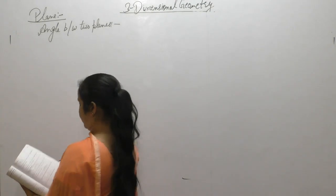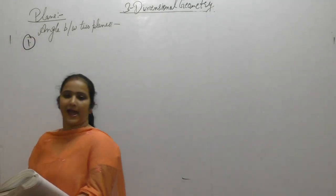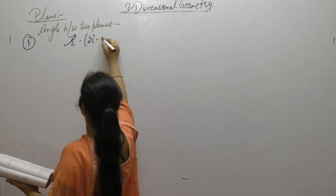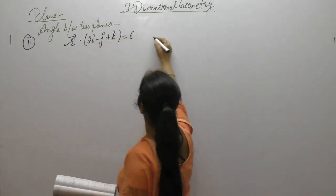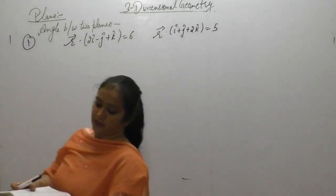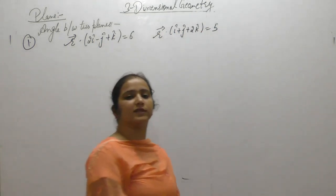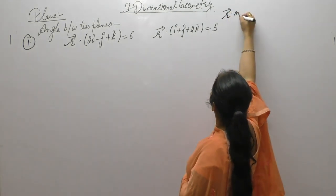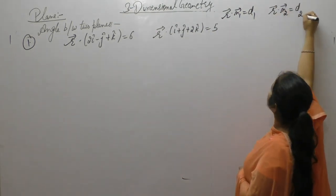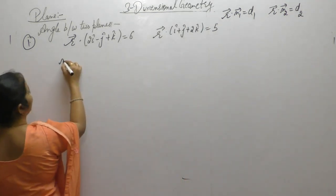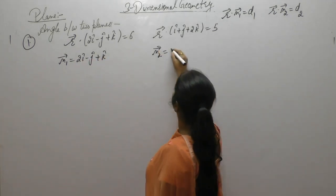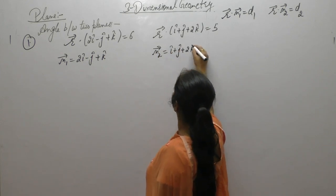Find the angle between the planes — vector form is given: R dot (2i minus j plus k) equals 6 and R dot (i plus j plus 2k) equals 5. First compare these vector equations with the general form R vector dot N1 equals D1 and R vector dot N2 equals D2. After comparing, we get N1 vector as 2i minus j plus k and N2 vector as i plus j plus 2k.